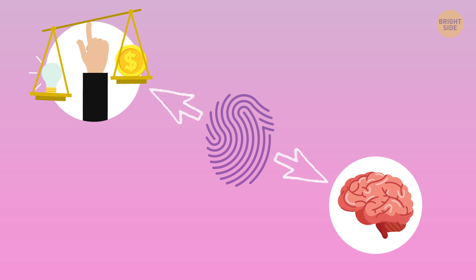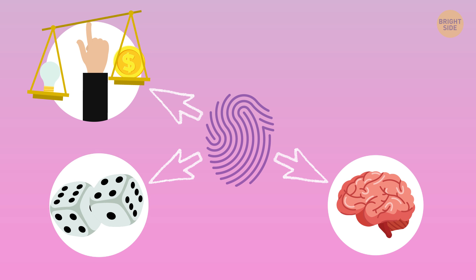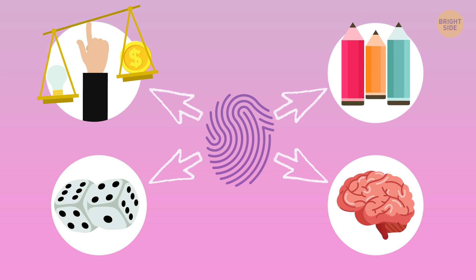The next type is the loop. People with this pattern on their fingers put self-expression and self-development in first place, even if it doesn't bring material benefits. Prone to mental work and risk, they're very energetic and creative people.